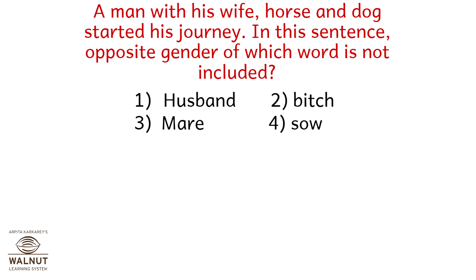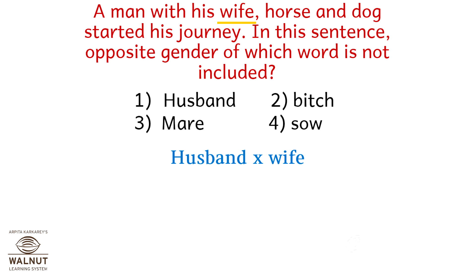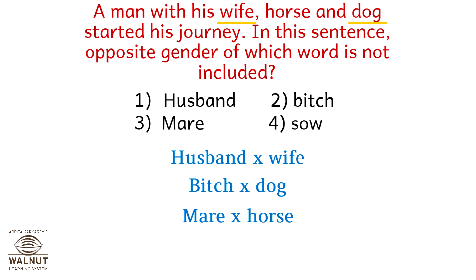A man with his wife, horse and dog started his journey. In this sentence, the opposite gender of which word is not included? Husband's opposite is wife — covered. Bitch's opposite is dog — covered. Mare's opposite is horse — covered. Sow's opposite is pig — and pig is not mentioned in the above sentence. So option number 4: Pig.